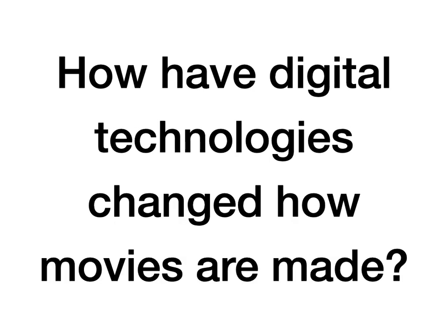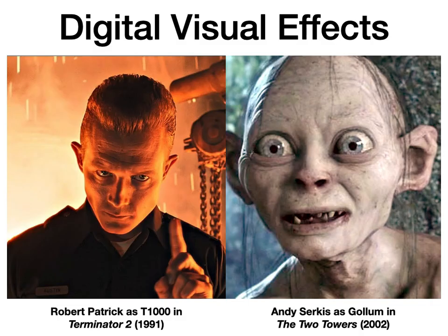So let's take this step by step. Step one: how have digital technologies changed how movies are made? Well, the most obvious ways are digital visual effects. I'm putting here two very famous CGI characters that you should familiarize yourselves with. Robert Patrick from Terminator 2 — the first all computer-generated character in movie history, if I'm not mistaken.